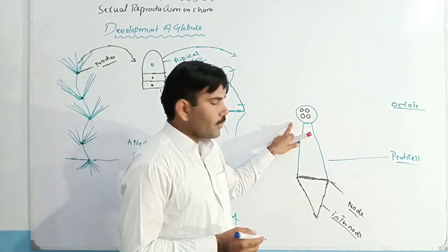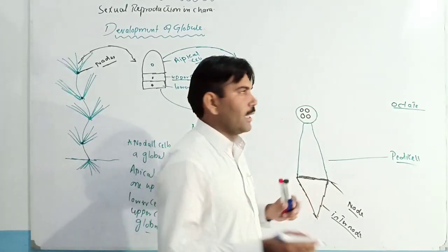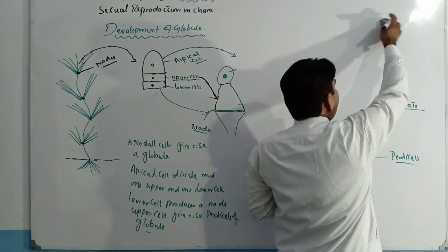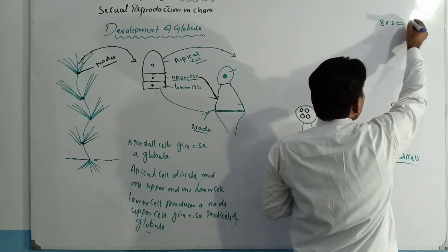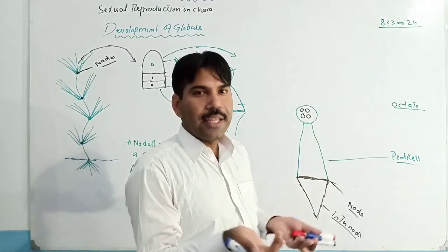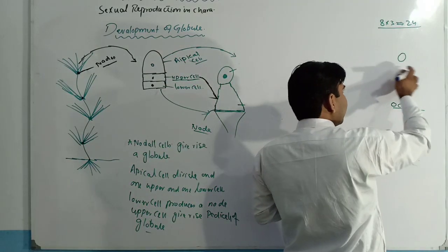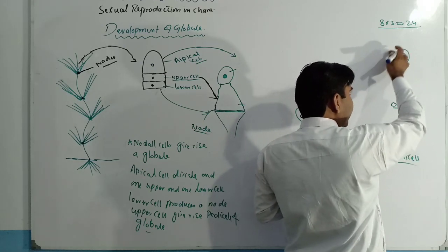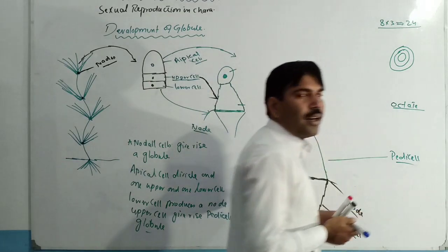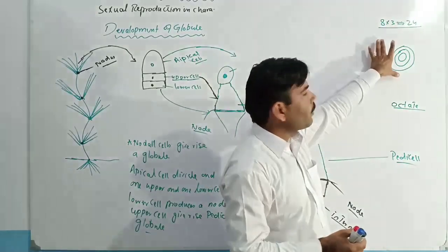Each cell of this octet will divide and produce three cells. There are eight cells and all eight cells produce three cells each, so the total number of cells becomes 24 cells. These 24 cells are arranged in three layers: 8 cells in the first layer, 8 in the second, and 8 in the third — giving 8, 16, and 24 cells total.